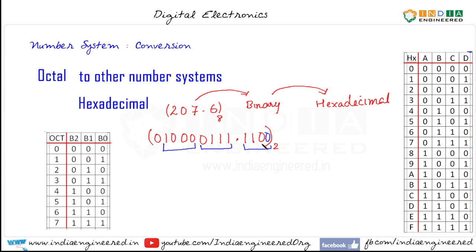Now we just need to look for these combinations. That is 1100. So 1100 is C, 0111 that will be 7, and 1000 that will be 8. So 87 point C to the base 16.